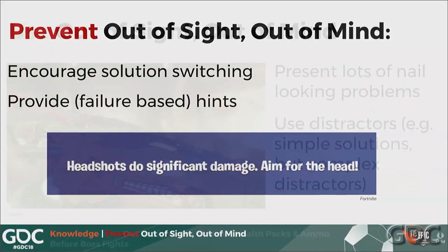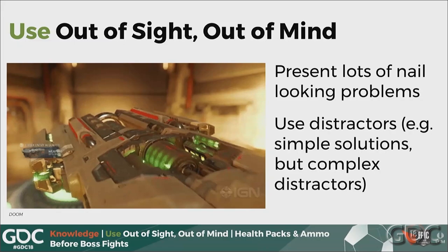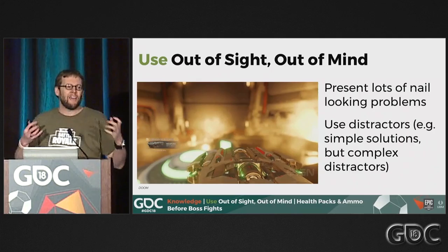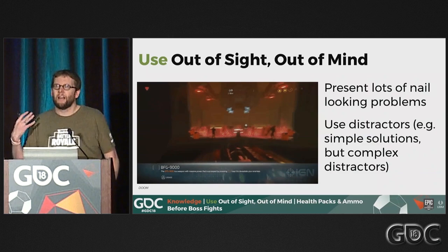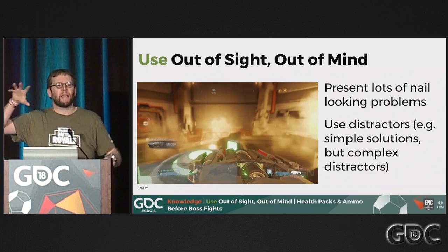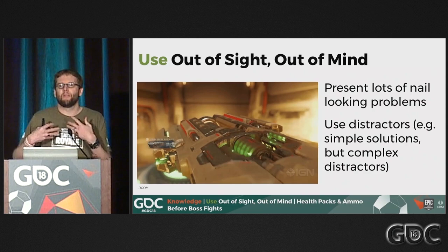You can use the availability heuristic by presenting a lot of nail-looking problems. You give someone a big gun good at shooting a lot of people, and the very next room has a lot of people in it. You can also use it in puzzle games — Portal would do this where you'd come into a room with all this complicated-looking stuff that seemed important, but the actual solution was very simple. Players working it out the complicated way and then maybe discovering the simple way is a wonderful experience.